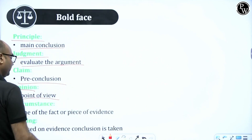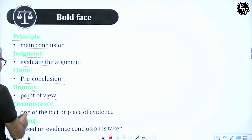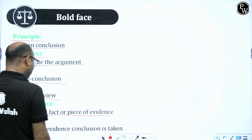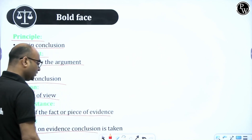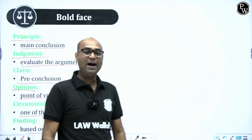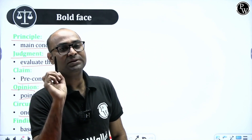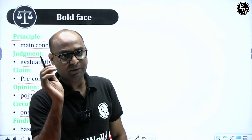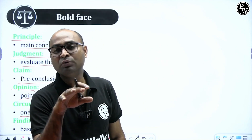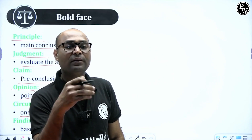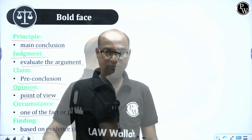Opinion is called point of view — the author has concluded considering something as a base. Circumstances means one fact or piece of evidence. Finding means a conclusion taken based on evidence. The most important terminologies are premise, conclusion, and extra information. All the others are parts of extra information. The key takeaway is to carry forward: premise, conclusion, and argument.